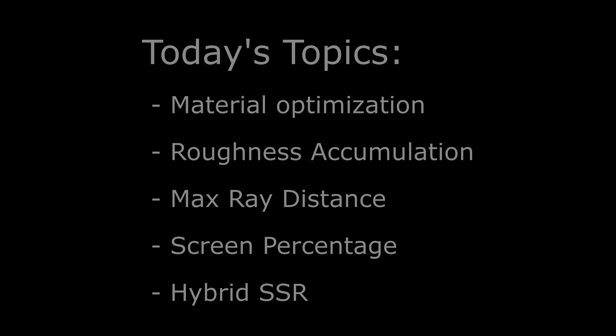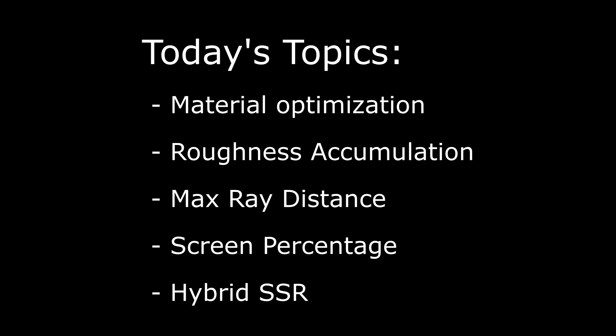In today's tutorial we're going to go over five methods for optimizing the performance of ray traced reflections in Unreal. First, material optimization — creating special materials designed specifically to be viewed in reflections. Then roughness accumulation, max ray distance, screen percentage, and finally hybrid SSR which mixes reflections between ray tracing and screen space ray tracing.